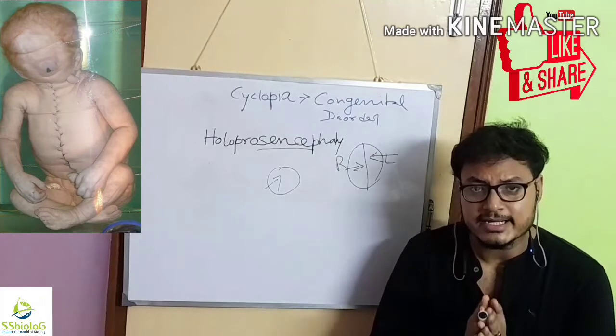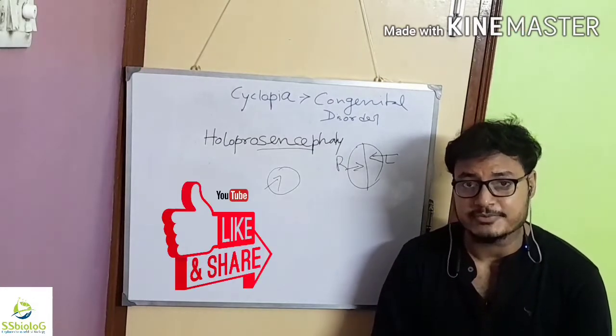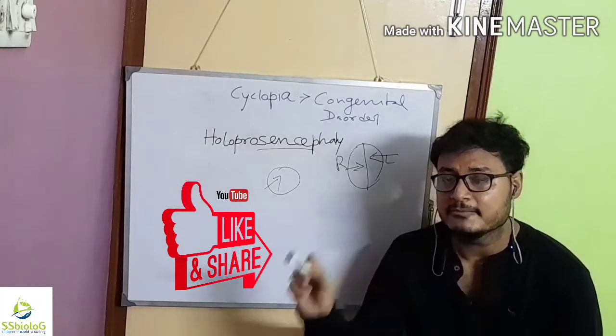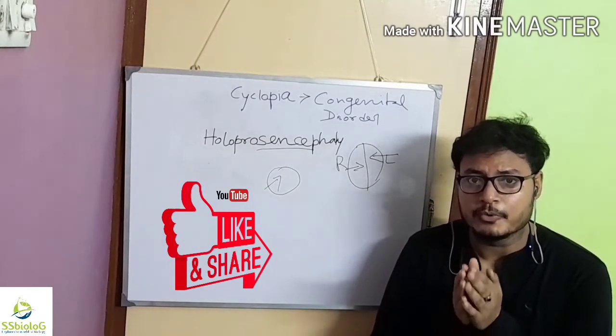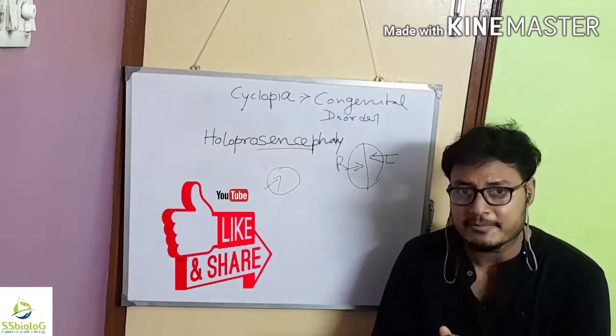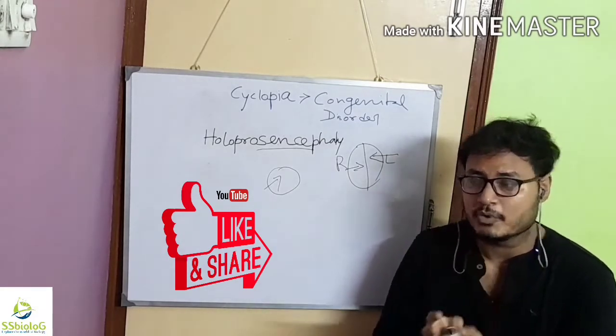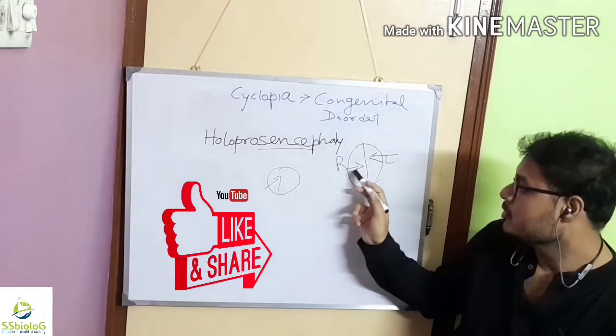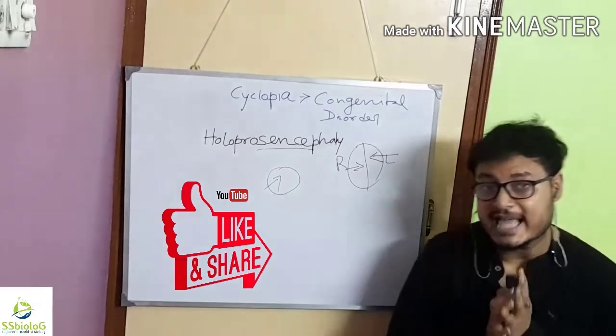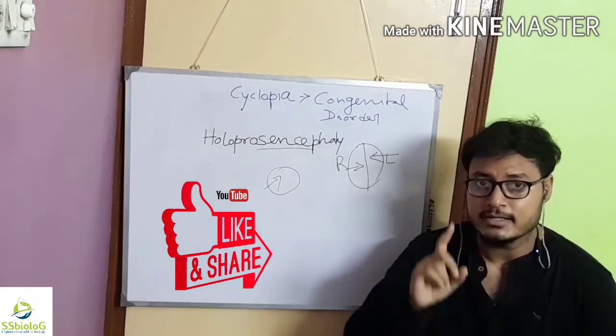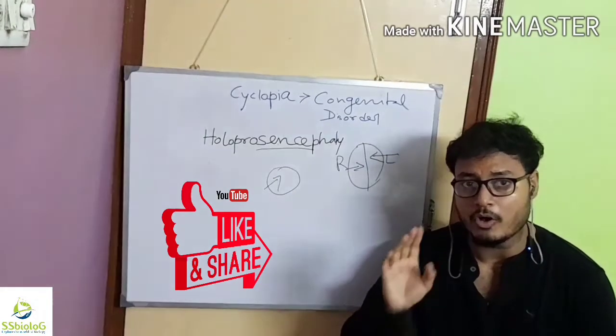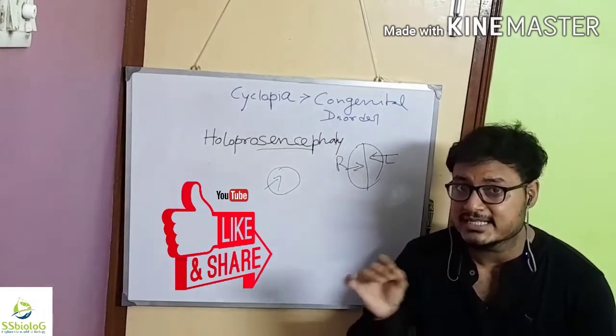Cyclopia occurs when certain proteins are mis-expressed during the developmental period, which causes the embryo to produce only one hemisphere rather than two hemispheres. That results in the formation of one eye, low olfactory, which results in mis-formation of eyes and nose.